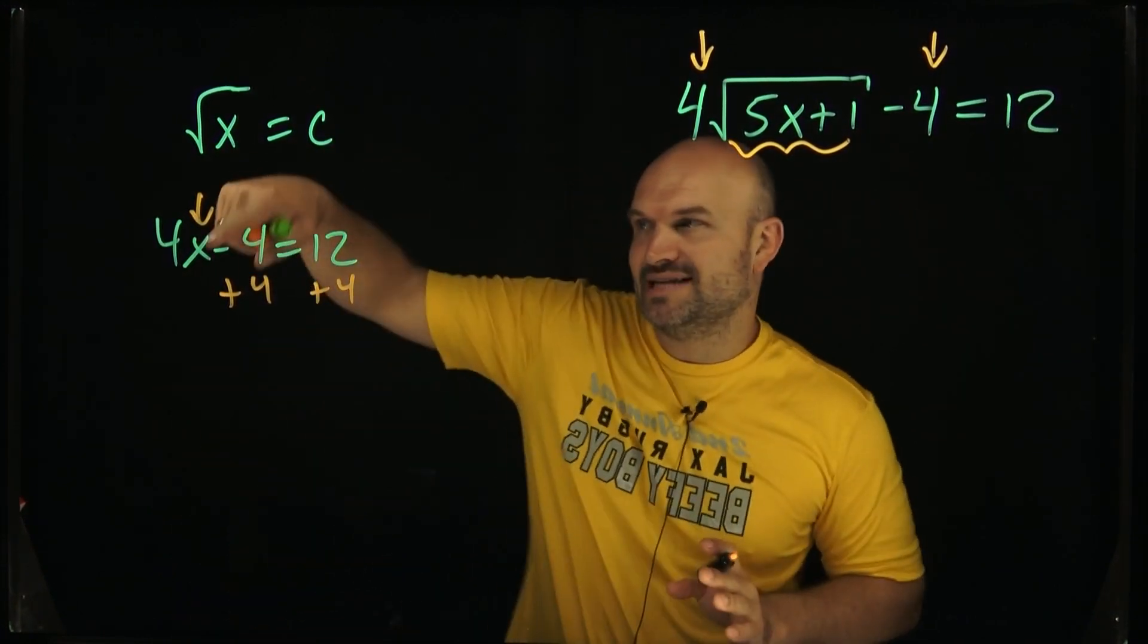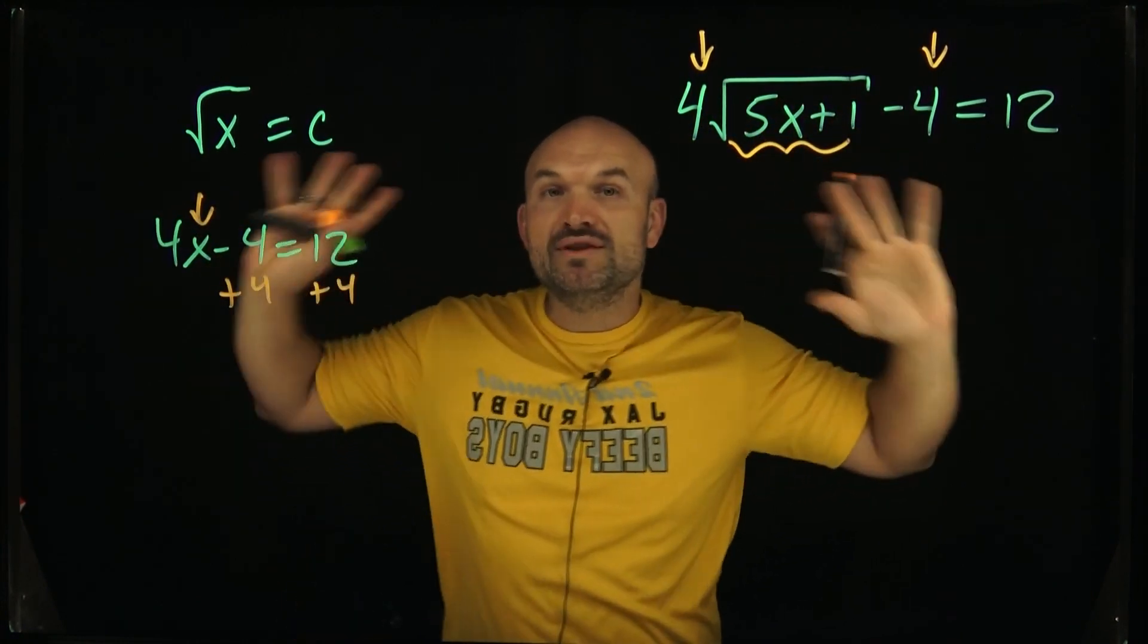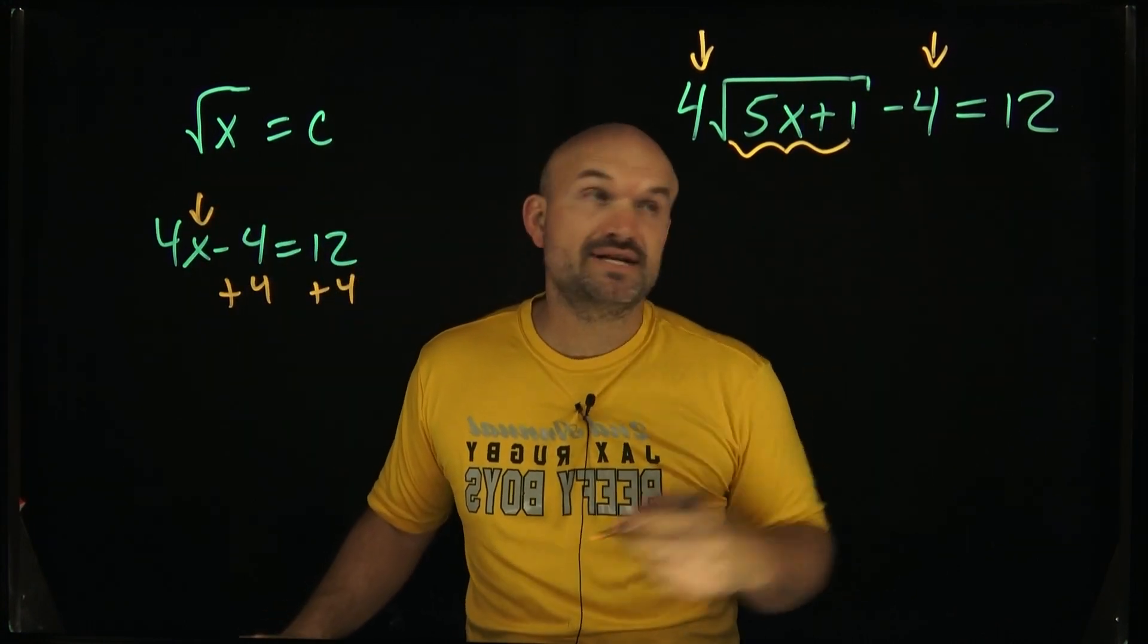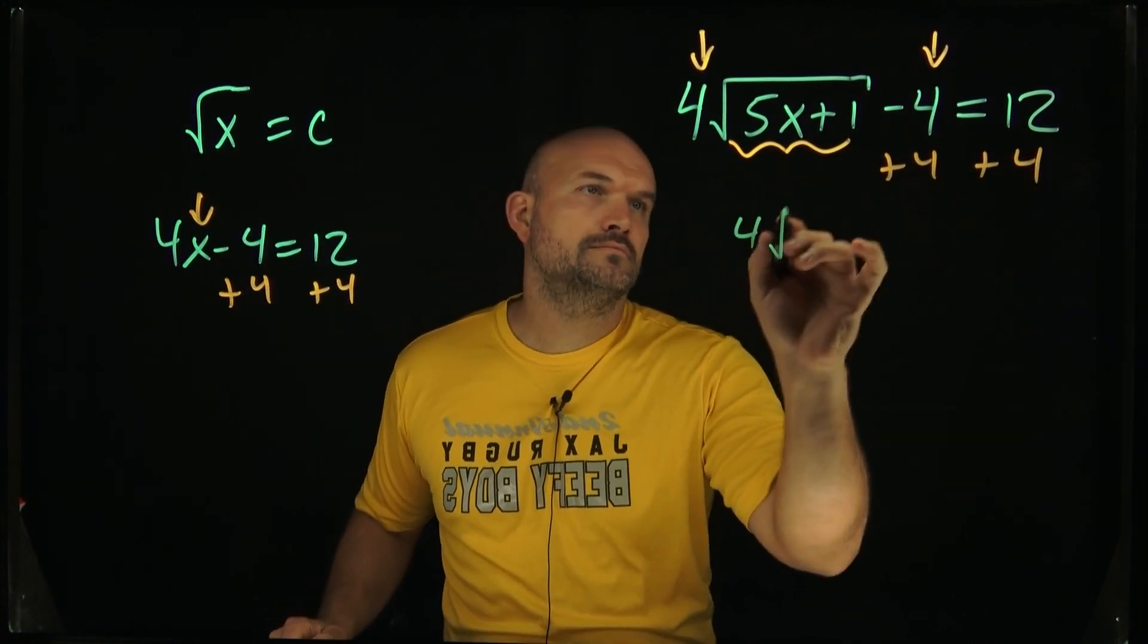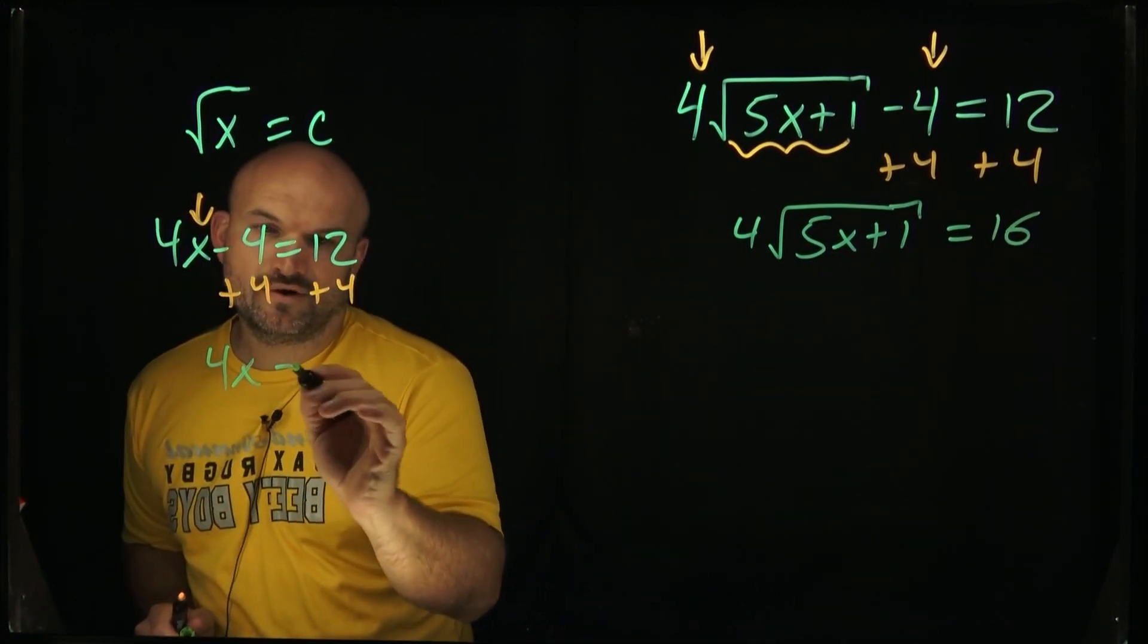Don't worry about what's inside the function, we're only focused on what is outside the function. So the first thing we're going to do is add 4 to both sides. Now, you can see over here we'd have 4x is equal to 16.